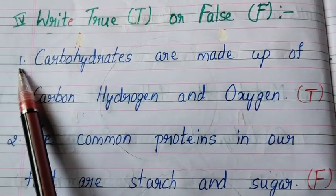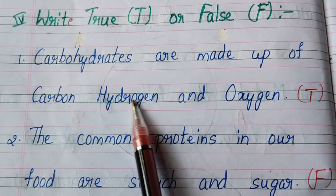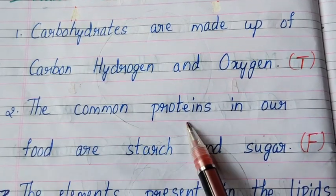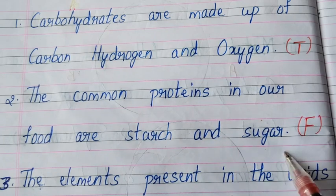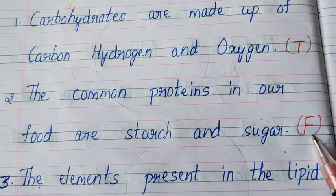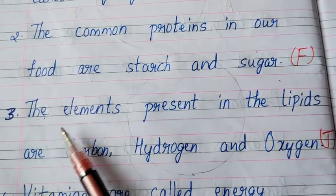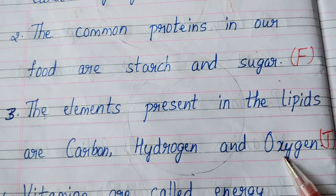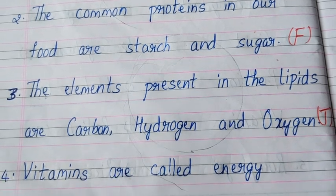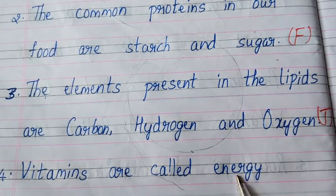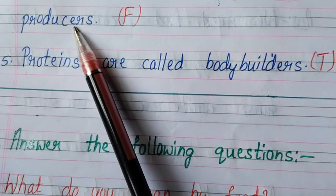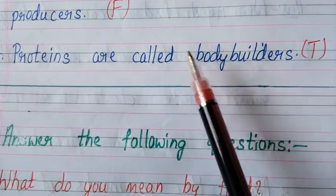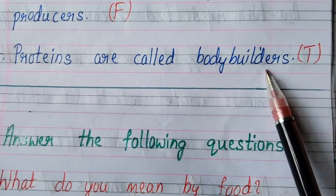Next is true or false. First one: carbohydrates are made up of carbon, hydrogen and oxygen — this statement is true. Second one: the common proteins in our food are starch and sugar — answer is false, this is a wrong statement. Third one: the elements present in the lipids are carbon, hydrogen and oxygen — this statement is correct, answer is true. Fourth one: vitamins are called energy producers — answer is false, this is a wrong statement. Fifth one: proteins are called body builders — this statement is correct, answer is true.